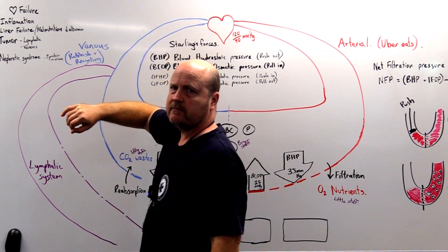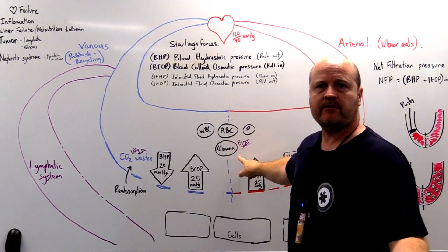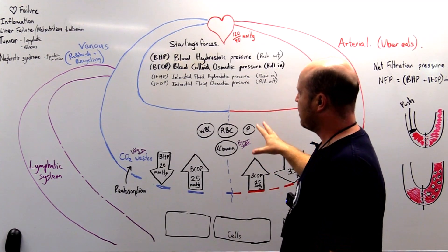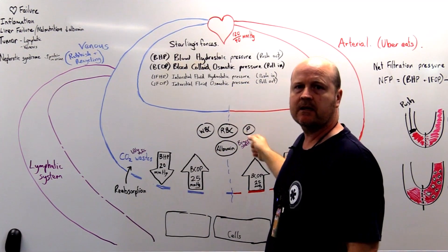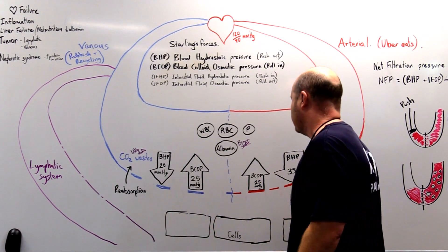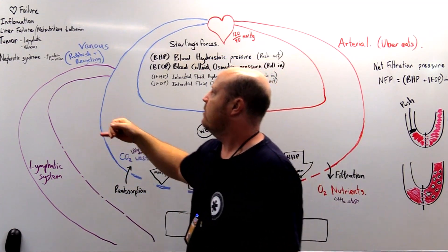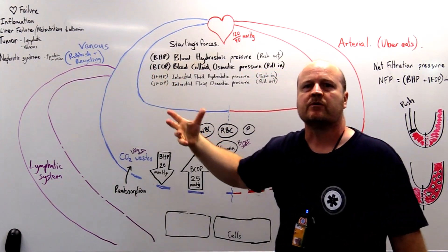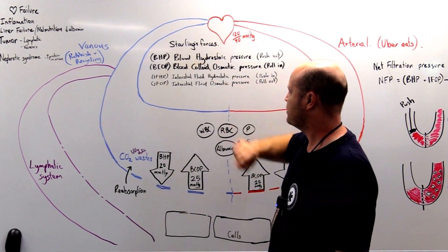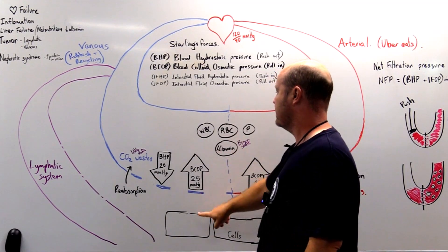Liver failure and malnutrition: our liver's job is to create albumin, which is one of our proteins. If our liver fails or we have malnutrition and we've got decreased albumin, we've got decreased blood osmotic pressure to draw fluid back into our capillaries, so fluid leaves and stays in the interstitial space. Same thing with nephrotic syndrome — if our kidneys are struggling, we're going to lose protein in our urine, meaning less protein in our capillaries, therefore decreased osmotic pressure and less pulling of fluid back in. So we lose more fluid into the interstitial space.